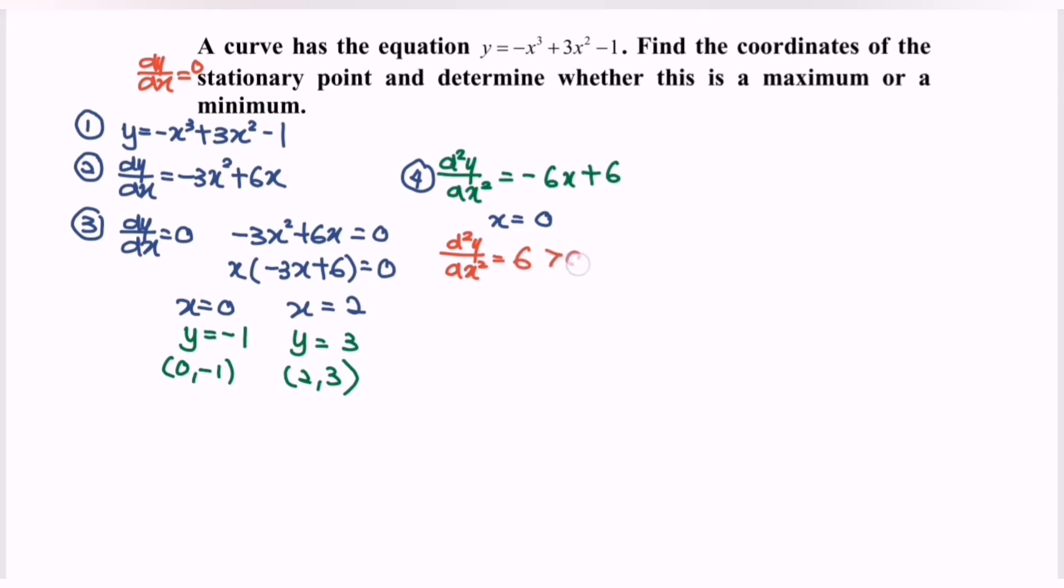So x = 0 is a minimum value. And for the point (0, -1) is a minimum point.